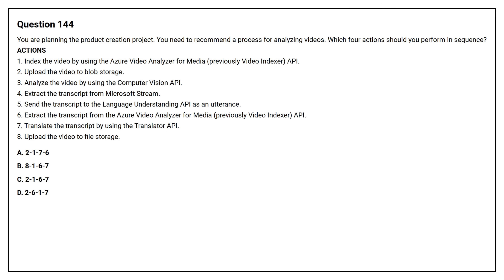One: Index the video by using the Azure Video Analyzer for Media, previously Video Indexer API. Two: Upload the video to Blob Storage. Three: Analyze the video by using the Computer Vision API. Four: Extract the transcript from Microsoft Stream. Five: Send the transcript to the Language Understanding API as an utterance. Six: Extract the transcript from the Azure Video Analyzer for Media, previously Video Indexer API. Seven: Translate the transcript by using the Translator API. Eight: Upload the video to File Storage.